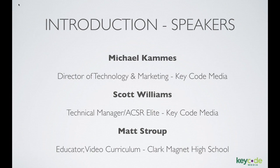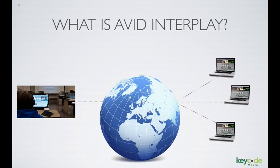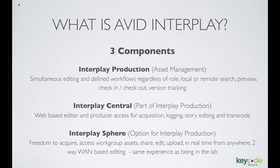Before we dive into the nitty gritty of the tech, I wanted to talk a little bit about what Avid Interplay is, so as we go through the demo you know exactly what Scott's going to be showing. Avid Interplay consists of three main components. The heart and soul — the brain — of Avid Interplay is called Interplay Production. Interplay Production comprises the servers, hardware and software that make all of the sharing and simultaneous editing work, including storage built on an ISIS 5000 system.